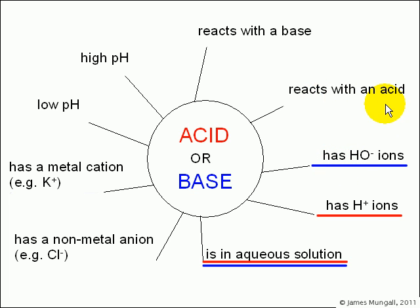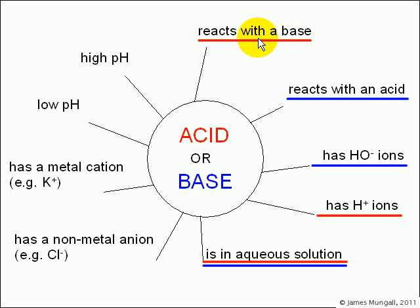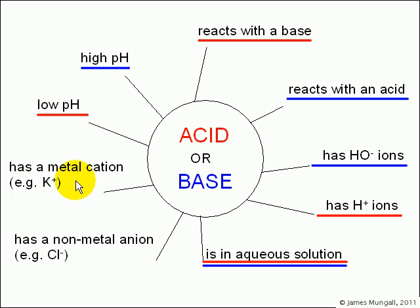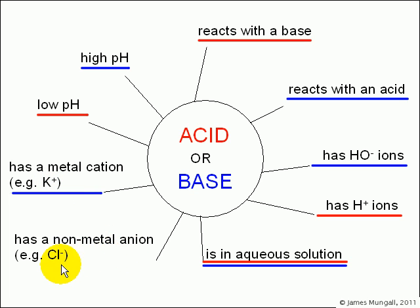Something which reacts with an acid we tend to think of as being a base, whereas something which reacts with a base would be an acid. A high pH is a basic solution, and a low pH is an acidic solution. With metal cations it's a base, whereas a non-metal anion also being present would be an acid.